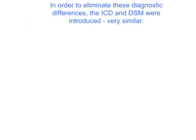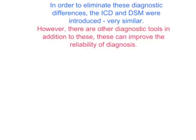In order to eliminate these diagnostic differences, the ICD and the DSM were introduced. These are two very similar major classification systems. However, there are several other diagnostic tools in addition to the DSM and the ICD that have been developed specifically to help clinicians diagnose schizophrenia — for example, the St. Louis criteria — all of which are still used today. The use of such criteria can actually improve the reliability of diagnosis.